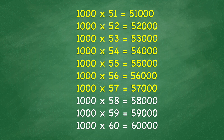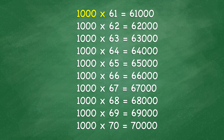1,000 x 57 equals 57,000. 1,000 x 58 equals 58,000. 1,000 x 59 equals 59,000. 1,000 x 60 equals 60,000. 1,000 x 61 equals 61,000. 1,000 x 62 equals 62,000. 1,000 x 63 equals 63,000. 1,000 x 64 equals 64,000.